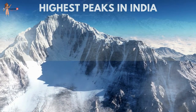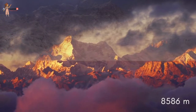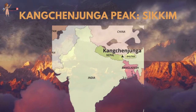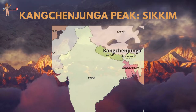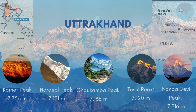Among the highest peaks of the Himalayas by Indian state: Kanchenjunga peak at 8,586 meters — the third highest peak in the world — is in Sikkim. Kanto peak at 7,090 meters is a mountain of the Eastern Himalayas. Kamit peak, Hardeol peak, Chaukamba peak, Trisul peak and Nandadevi peak are in Uttarakhand. Nandadevi is the second highest mountain in India after Kanchenjunga and the highest located entirely within the country.